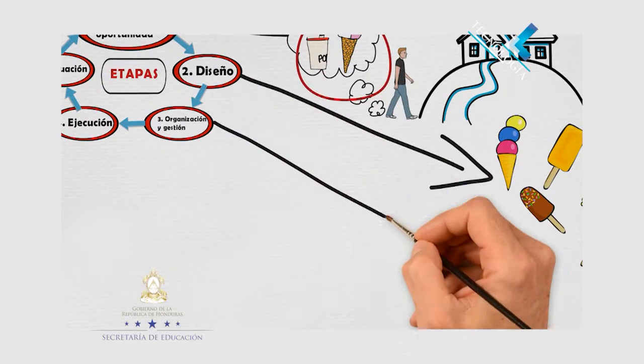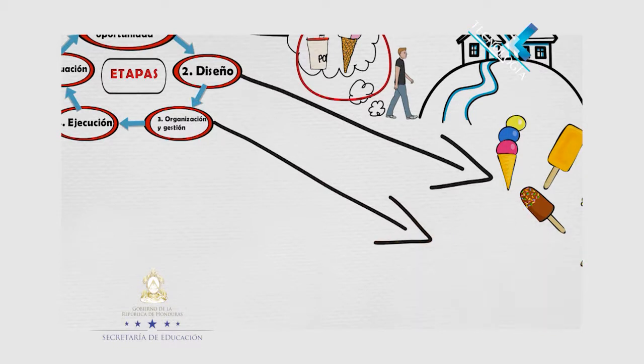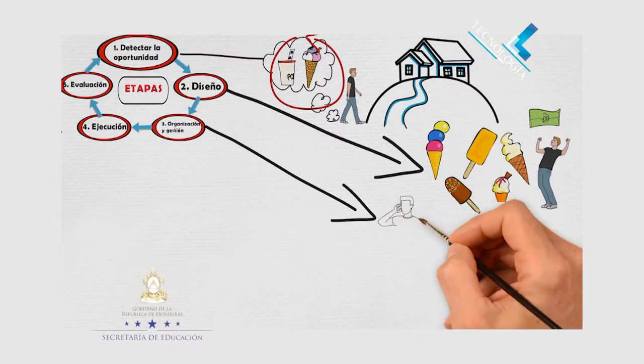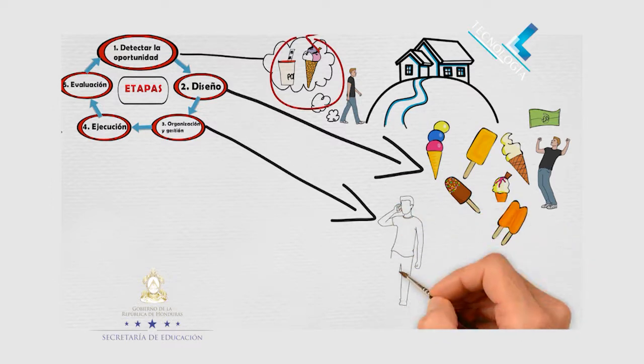Bueno, la tercera etapa es la organización y gestión. La realización de un proyecto requiere planificar el modo en que se llevará a cabo, detallando todas las tareas a realizar, su secuencia y el tiempo en el que se debería realizar.